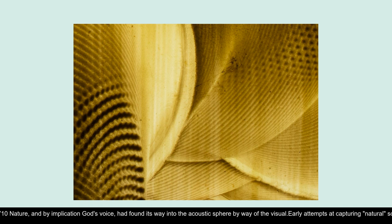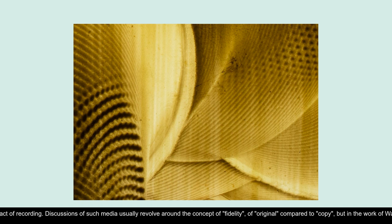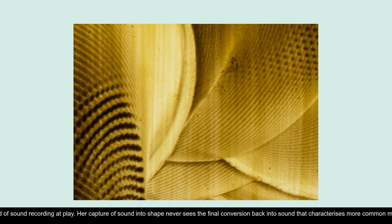Early attempts at capturing natural sound could be crudely summarized as a history of speaking loudly and steadily into apertures and tubes, with perhaps the odd song to lighten the mood. However, these acts of capture were rarely understood as creative in and of themselves. The aesthetic object was almost always understood to be the qualities of the performed voice or instrument, as distinct from the transformative act of recording. Discussions of such media usually revolve around the concept of fidelity of original compared to copy. But in the work of Watts Hughes, we see a different kind of sound recording at play. Her capture of sound into shape never sees the final conversion back into sound that characterizes more common modes of recording. There is no final playback, no loss of fidelity or loss of being between original and copy.